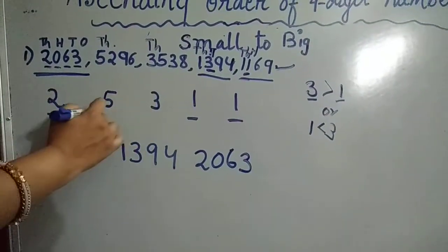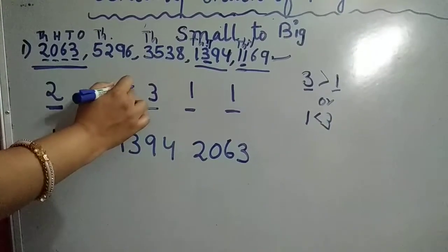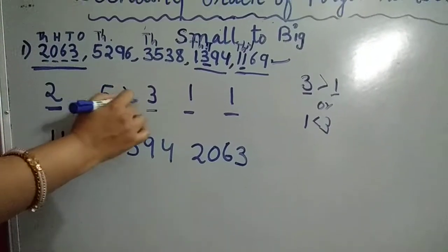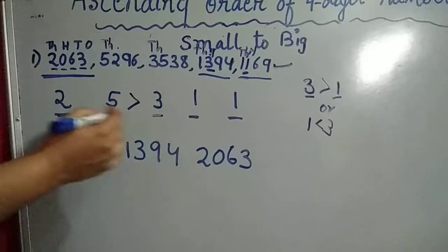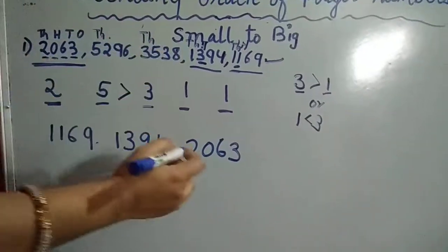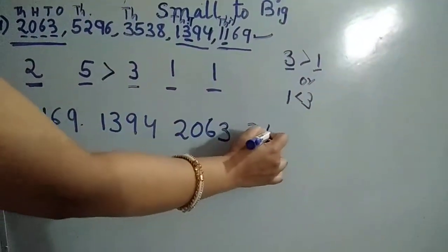Then we are left with two numbers. Three is less than five, or we can say five is greater than three. So the next biggest number is 3538.